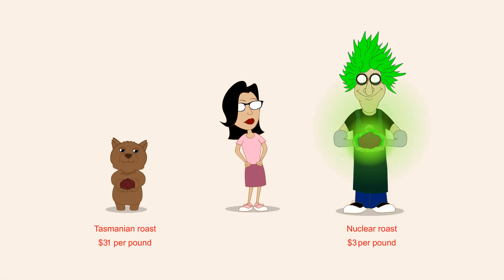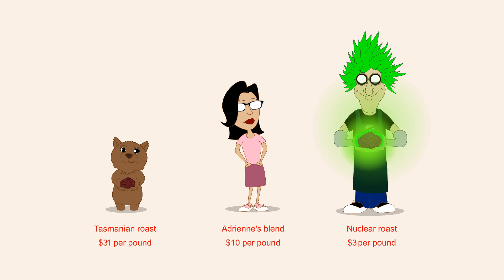Adrienne thinks that a moderately priced coffee might appeal to a broader group of customers. She decides to mix the two types of coffee beans to create a special blend costing $10 per pound. To do this, Adrienne must calculate the quantity of each type of coffee bean needed to create a pound of coffee costing $10.